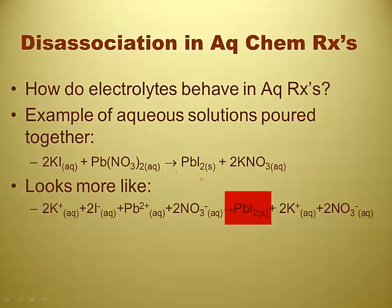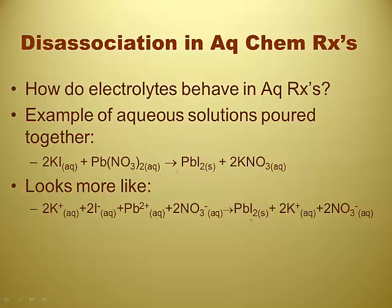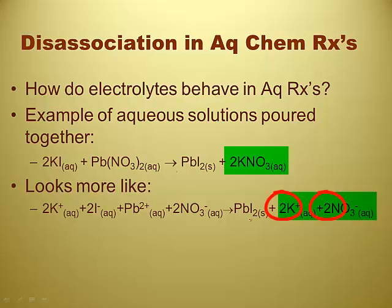The lead iodide is not soluble, which means it doesn't dissociate — it stays together. You don't have to write the ions because it doesn't turn into ions. You're writing all the strong electrolytes in ion form in this line, and lead iodide is not a strong electrolyte because it's not a soluble salt. The last two things are the potassium ion and the nitrate ion — they both get twos in front of them because there was a two in front of potassium nitrate. You're actually submicroscopically accounting for every ion in the mixture.